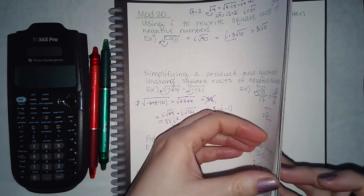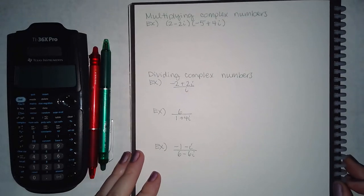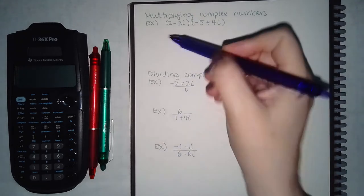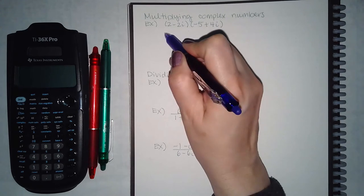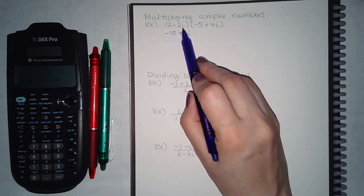We are now going to continue with module 20. We've added and subtracted complex numbers, and now we have to multiply complex numbers. This is FOIL — the same exact idea. We're going to do 2 times negative 5 which is negative 10, and 2 times positive 4i which is positive 8i.